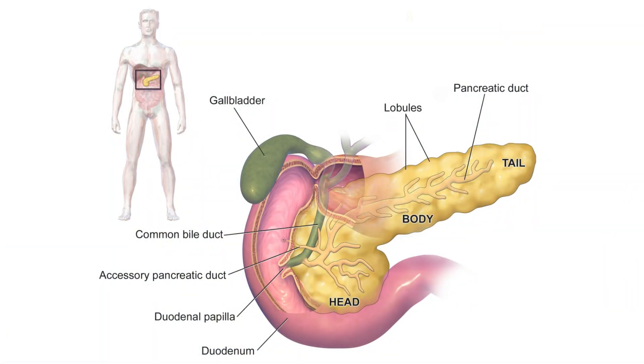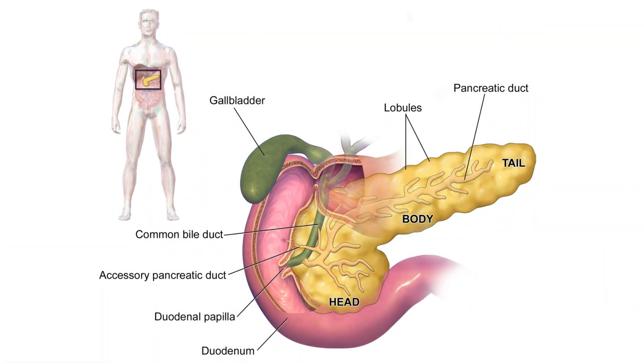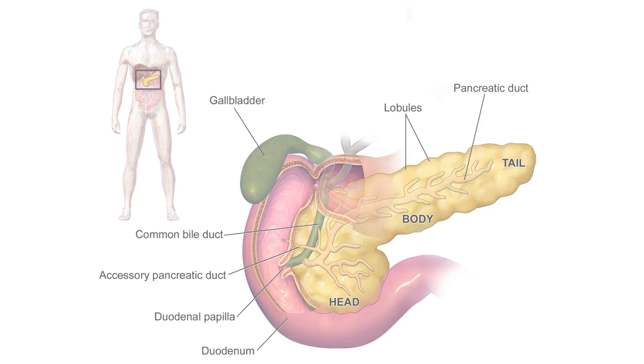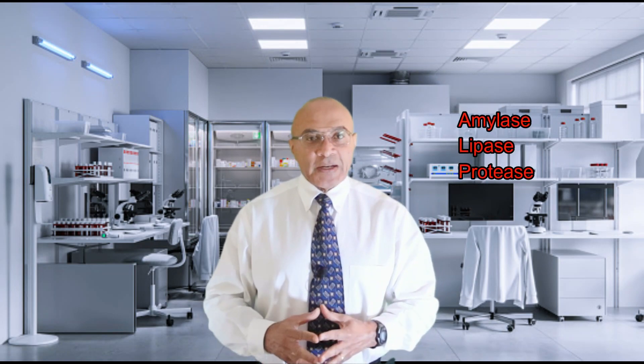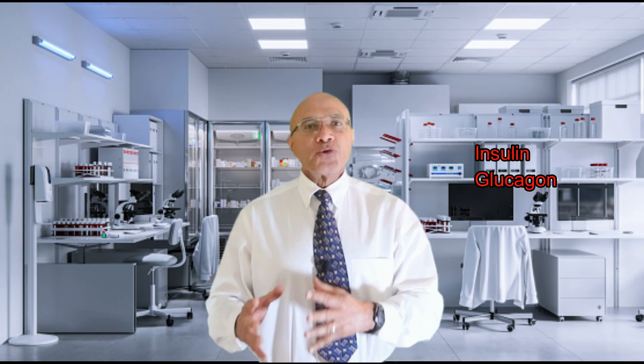The pancreas is an organ situated next to the stomach, responsible for the production and secretion of digestive enzymes such as amylase, lipase, and proteases such as trypsinogen. It is also responsible for the production of insulin and glucagon, two hormones that regulate blood sugar. Digestive enzymes are harsh enzymes that can damage the tissues of the pancreas if they become activated before they reach the bowel — and this is exactly what happens in pancreatitis.